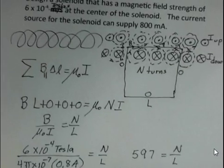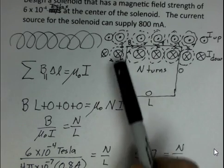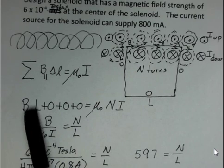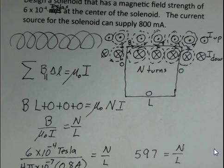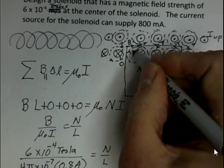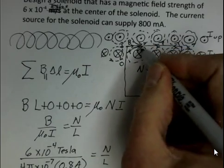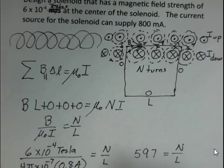We used Ampere's law, a simplified version of it, with the summation symbol summing over four separate paths. Only one part of the path had a non-zero magnetic field. That's the part inside the solenoid where the magnetic fields created by each wire are adding together. In between the coils, they cancel at zero. And far away from the current, the magnetic field will be weak, approximately zero.